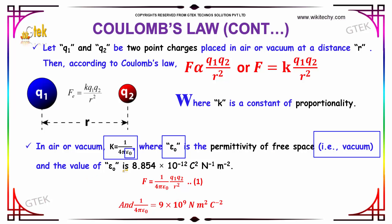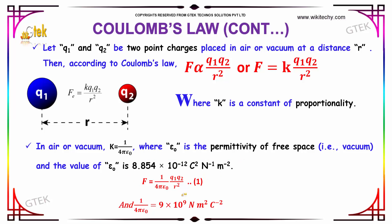The value of epsilon 0 is 8.854 into 10 to the power of minus 12 C squared N to the power of minus 1 m to the power of minus 2 units. Thereby we can yield the first equation: F equal to 1 divided by 4 pi epsilon 0 into Q1 into Q2 divided by R square.